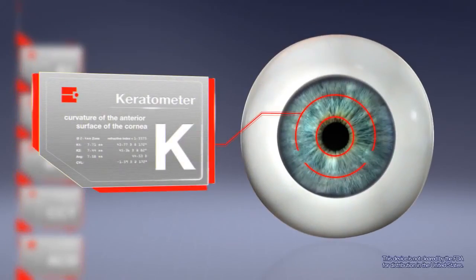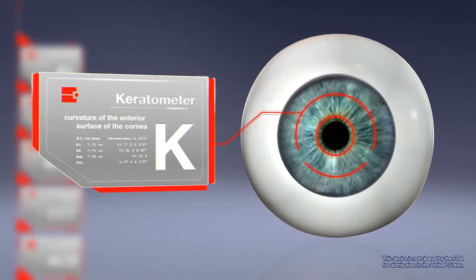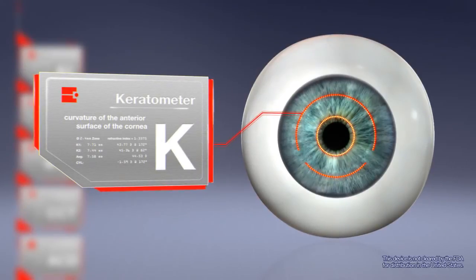The AL-Scan offers highly accurate keratometry measurements with a maximum of 360 data points in each of two rings.